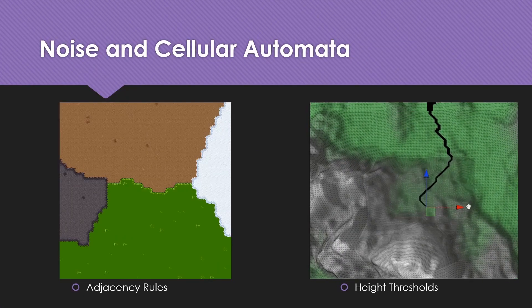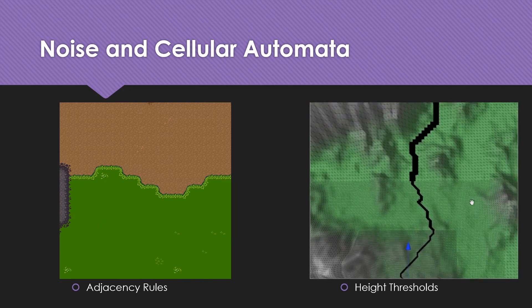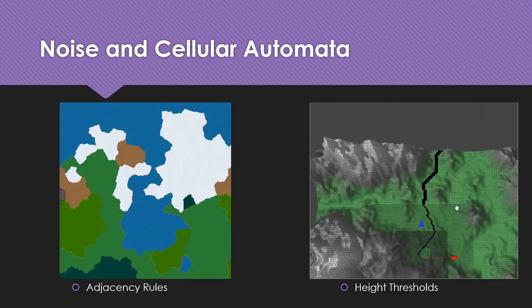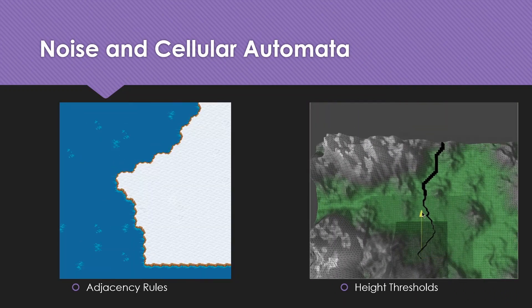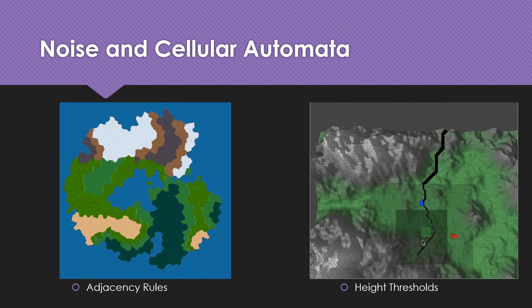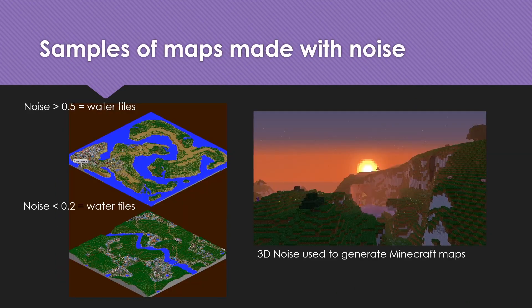It is also common to use adjacency rules to determine regions on a map, or use randomness as height as shown in the image on the right. Noise-based procedural content techniques have been used in a variety of games over a long period of time. An example of PCG from early games is SimCity 2000, seen on the left, where it uses noise to generate its terrain.